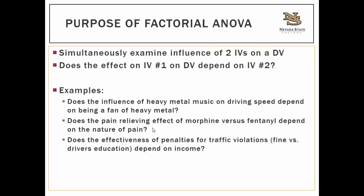In this first example, the two independent variables are listening to heavy metal music — the type of music being listened to — and being a fan of heavy metal music. Those are both your independent variables, and you want to see if those two things interact to have an influence on driving speed.